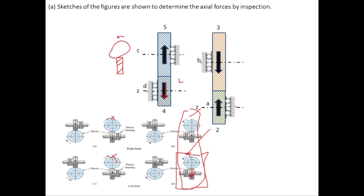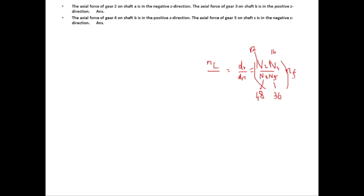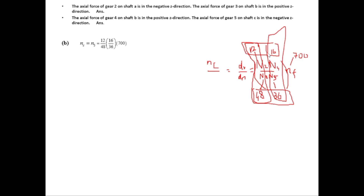The speed of the last gear divided by the speed of the first is equal to the product of the number of teeth of the drivers divided by the product of the number of teeth of the driven gears. This equals N2 × N4 divided by N3 × N5. With N2 = 12, N4 = 16, N3 = 48, N5 = 36, and the input speed of 700 RPM, we get a speed of shaft C equal to 77.78 RPM in the anti-clockwise direction.